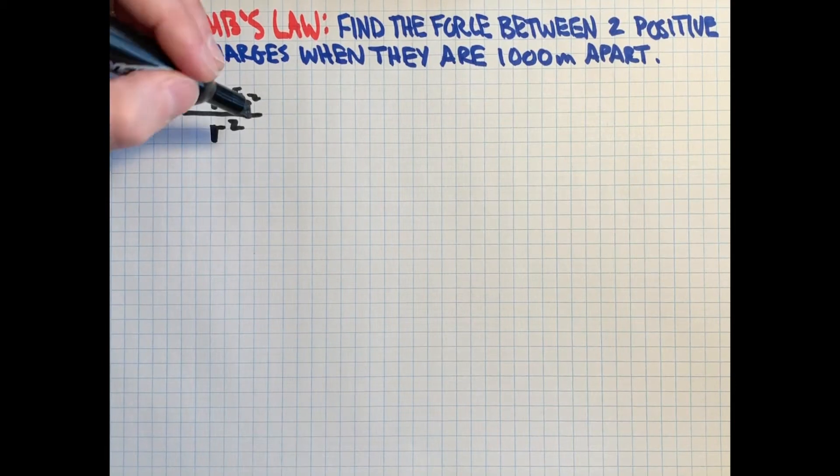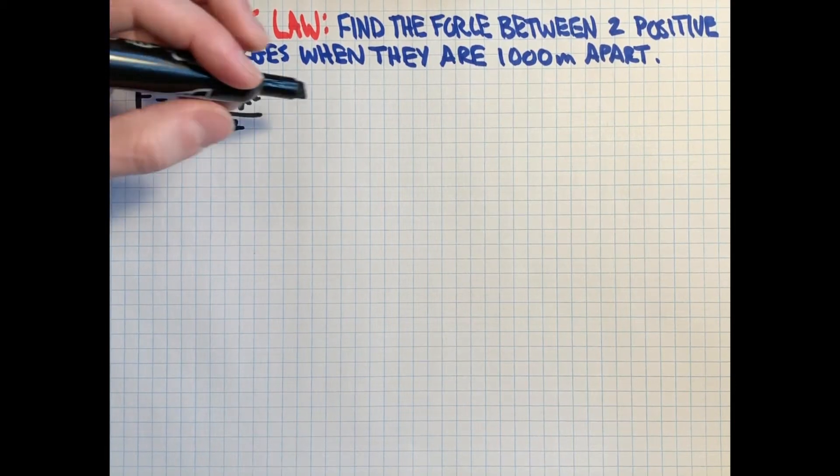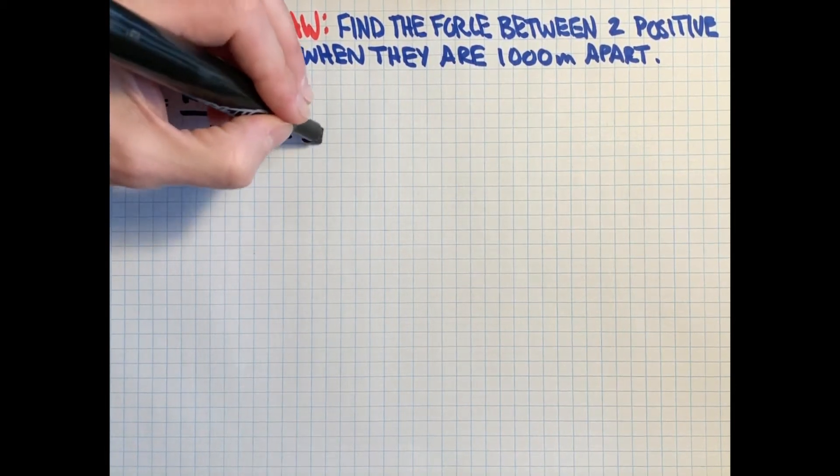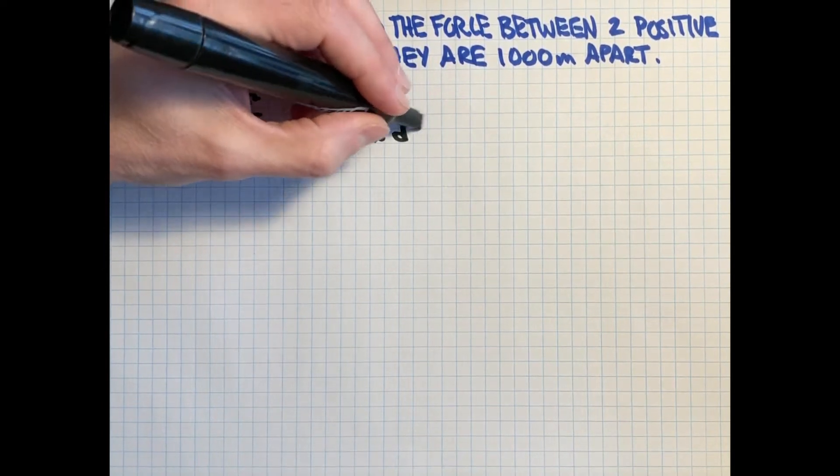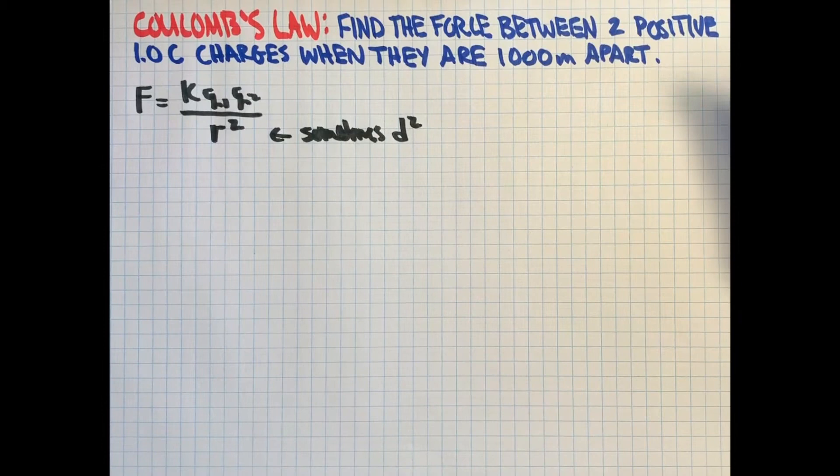R is really just the distance between things, so you'll sometimes see this written as D squared because it is a distance. Sometimes you'll also see capital Qs in this equation. They all mean the same thing.